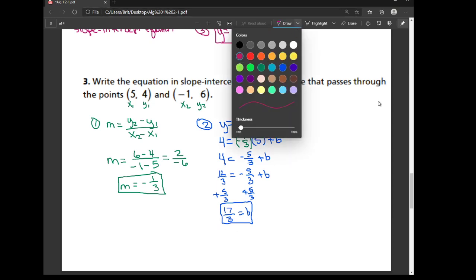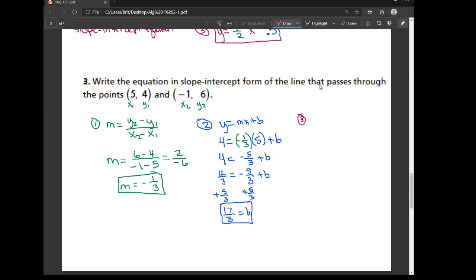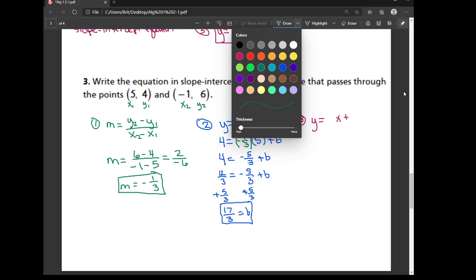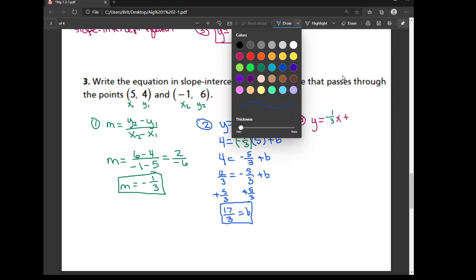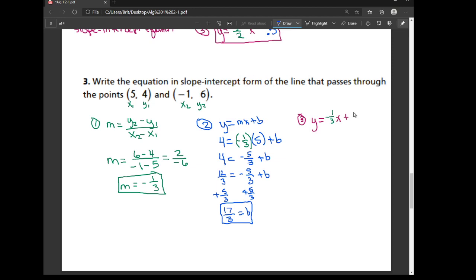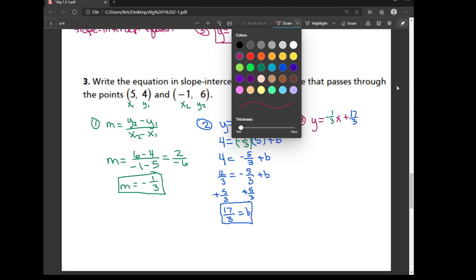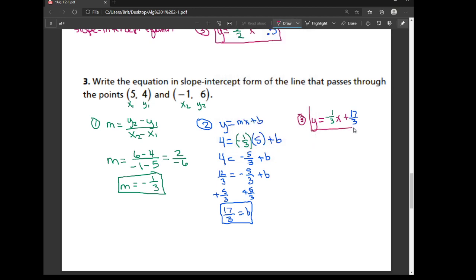And then our last step, step number 3, is to take our m and to take our b, and to plug them in to the slope intercept form of the equation. So where the m goes in our slope intercept form, I'm going to write negative 1 thirds. And where my b goes, or my y intercept value, I'm going to put 17 thirds. And there we have it, our final answer. The slope intercept form of the equation.